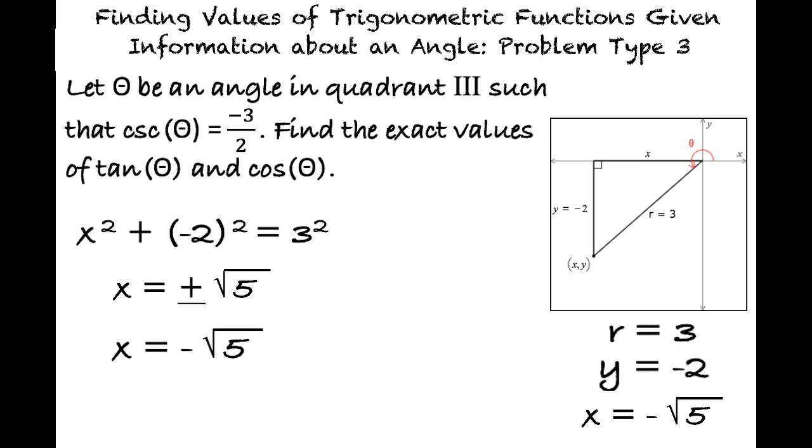Exactly. Substituting the values for opposite and adjacent into the trigonometric identity for tangent of theta yields 2 times the square root of 5 over 5, and substituting the adjacent and hypotenuse sides for cosine of theta equals the negative square root of 5 over 3.